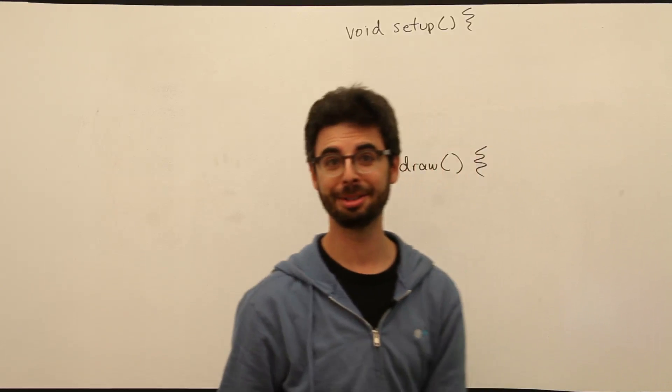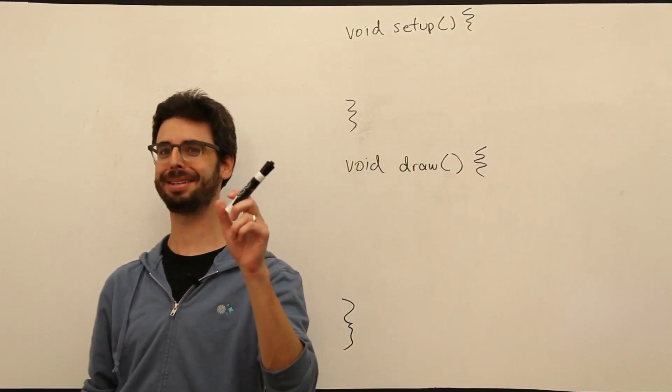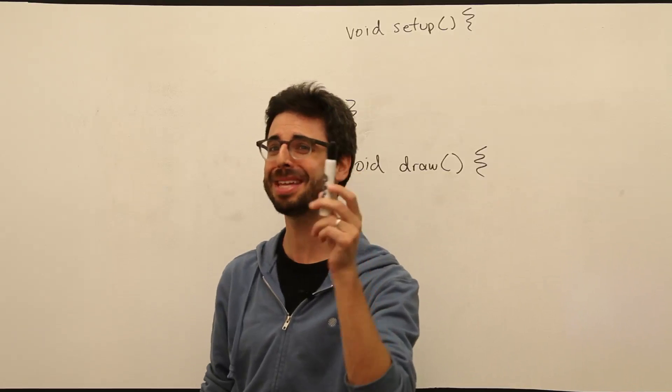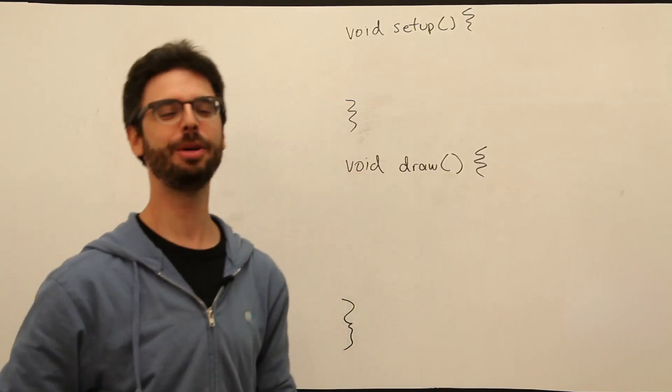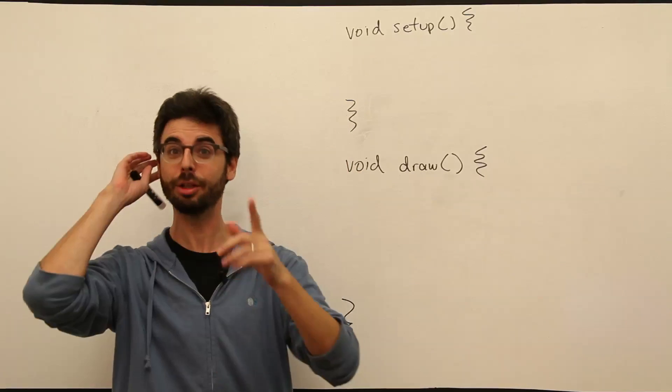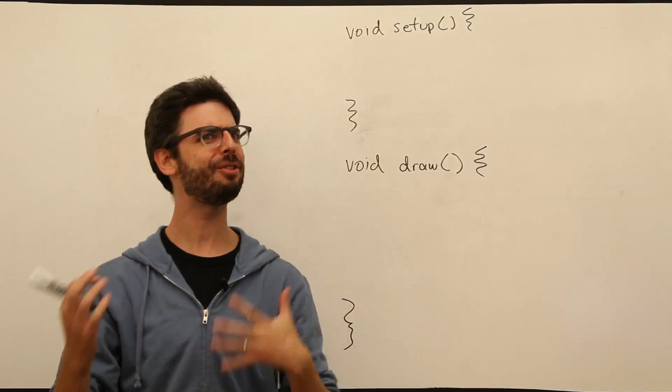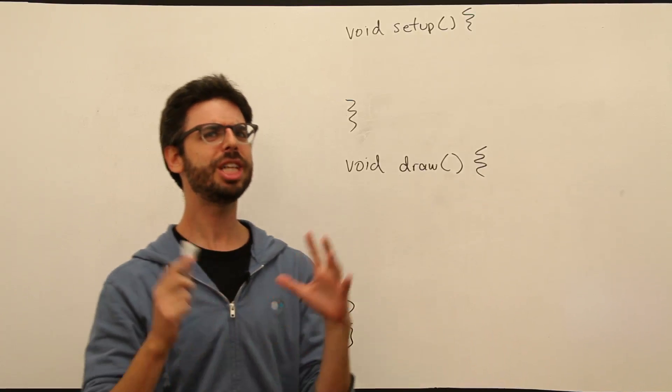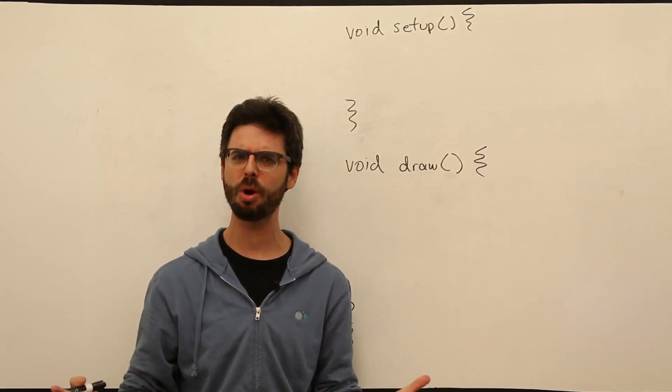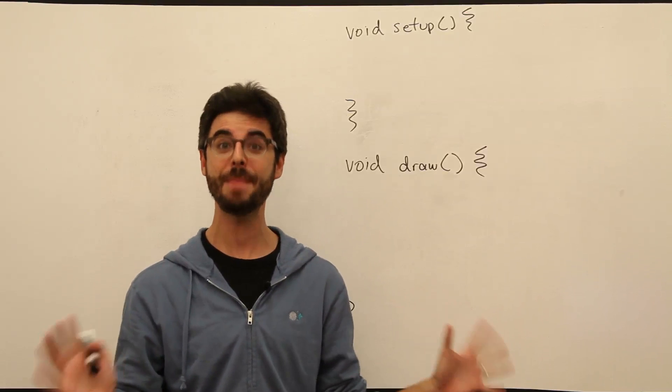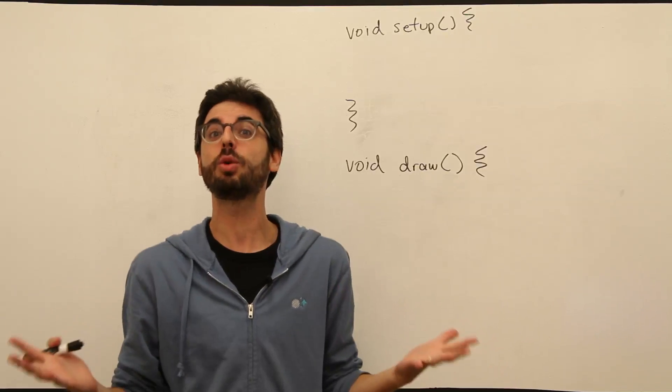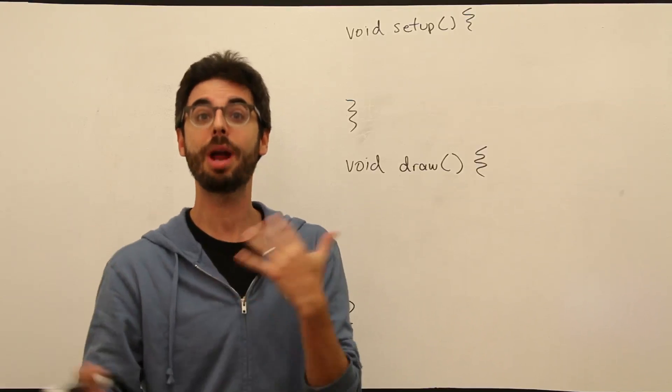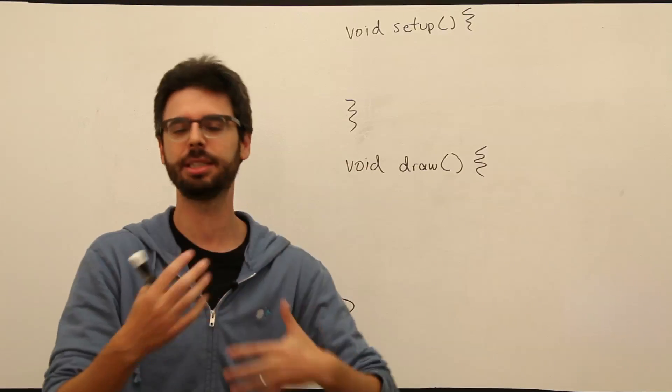OK, this video is entitled Loop Within a Loop, but it is not the video you think it is. It is not the next one, which is about nested loops, which is also about a loop within a loop. This is about a different kind of loop within a loop, which is something very specific to processing and animation programs, which I just feel is important to mention, because it is a source of confusion when you're first beginning to program animations and repeat things in your code.